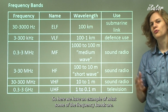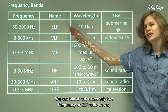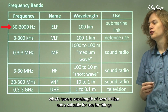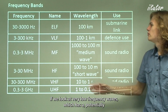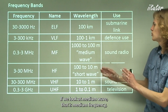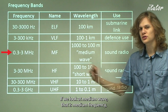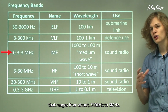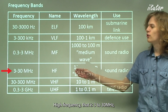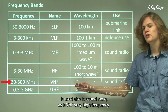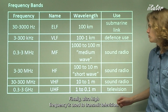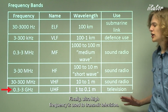Here we have an example of some of the frequency bands. Extremely low frequency, or ELF, radio waves have a wavelength of over 100 kilometers and are suitable for underwater use such as submarines. Very low frequency waves are often used by the military. Medium frequency, ranging from about 300 kilohertz to 3 megahertz, is used for AM radio. High frequency, 3 to 30 megahertz, is also used for sound radio, as is VHF — very high frequency — which is the band on which FM radio is broadcast.